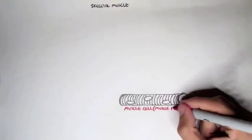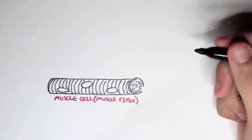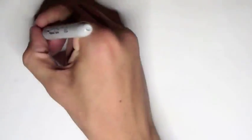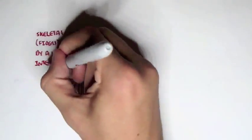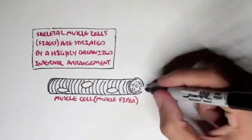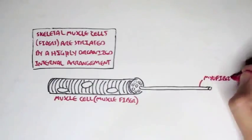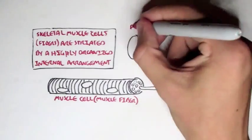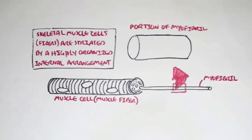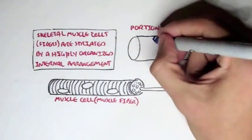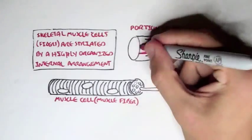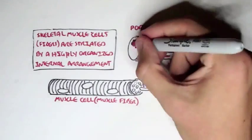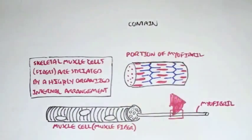A skeletal muscle cell is known as a muscle fiber. Interestingly enough, skeletal muscle cell fibers are striated by a highly organized internal arrangement. This muscle fiber has an internal arrangement, and if we pull some things out from this muscle fiber, we can find myofibrils. So a muscle fiber contains many myofibrils. And if we take a portion of this myofibril, we can see that it's made out of some interesting structures known as the thin and thick filaments. The myofibrils contain thick and thin filaments.